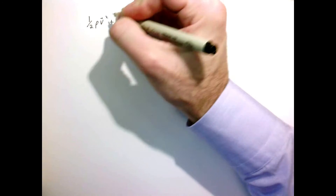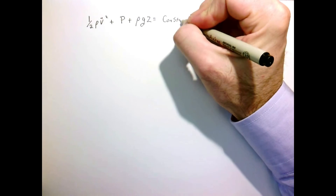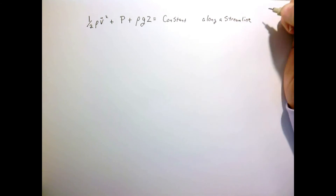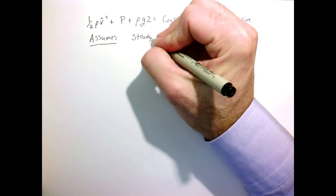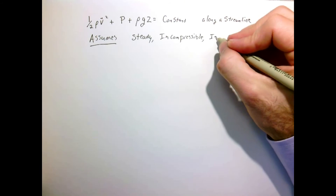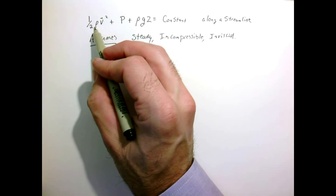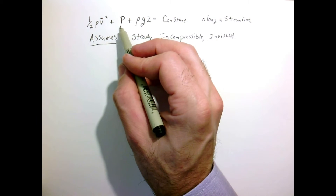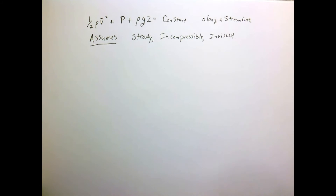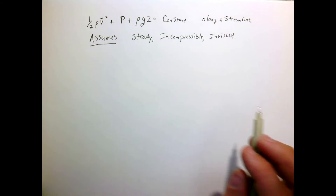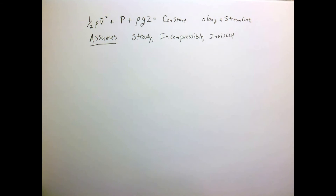So our equation is: one-half rho v-squared plus pressure plus rho*g*z equals a constant along a streamline. Here, one-half rho v-squared is kinetic energy, the pressure term can be thought of as work due to pressure forces, and rho*g*z is potential energy. This assumes steady, incompressible, and inviscid flow. Despite these restrictions, this is still a useful equation giving us both quantitative and qualitative understanding of flow phenomena.